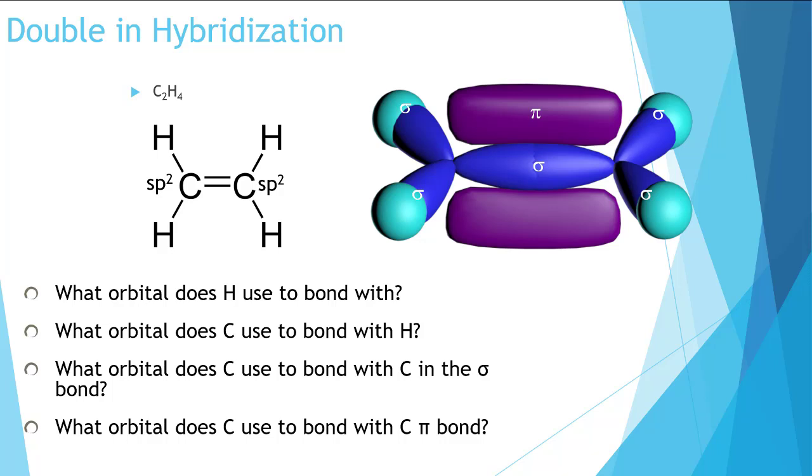Alright. Hydrogen will be using its s orbital to form the bond, and that's true of all four hydrogens. Carbon will be using its sp2 orbital to form the bond with hydrogen. It will also be using its sp2 orbital to form the carbon-carbon bond, and this is true for both of the carbons.